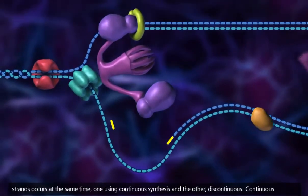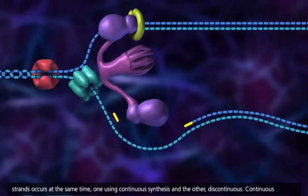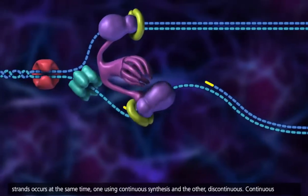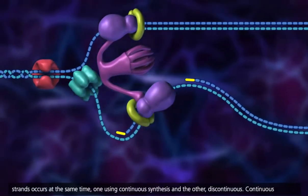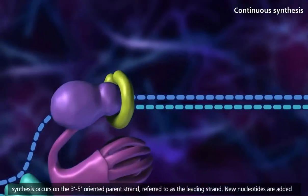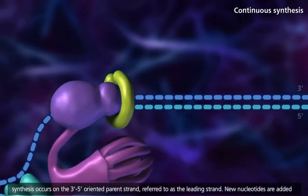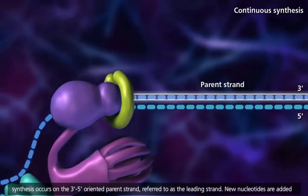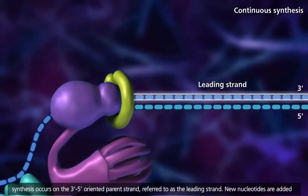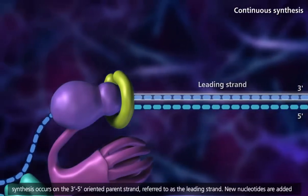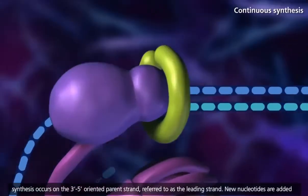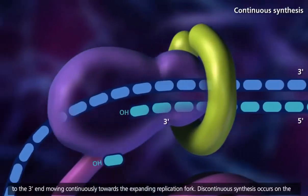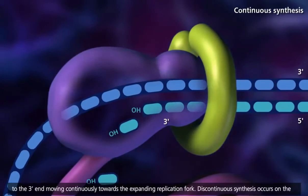Replication of both strands occurs at the same time, one using continuous synthesis and the other discontinuous. Continuous synthesis occurs on the 3' to 5' oriented parent strand, referred to as the leading strand. New nucleotides are added to the 3' end, moving continuously toward the expanding replication fork.